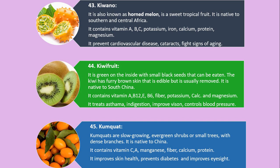Number 45. Kumquat. Kumquats are slow growing, evergreen shrubs or small trees with dense branches. It is native to China. It contains vitamin C, A, manganese, fiber, calcium and protein. It improves skin health, prevents diabetes and improves eyesight.